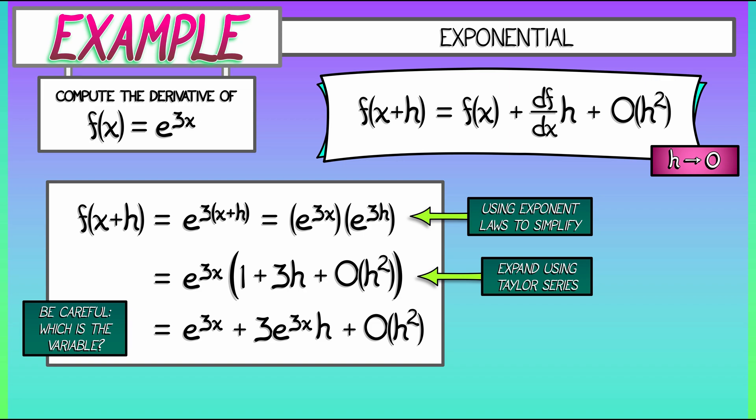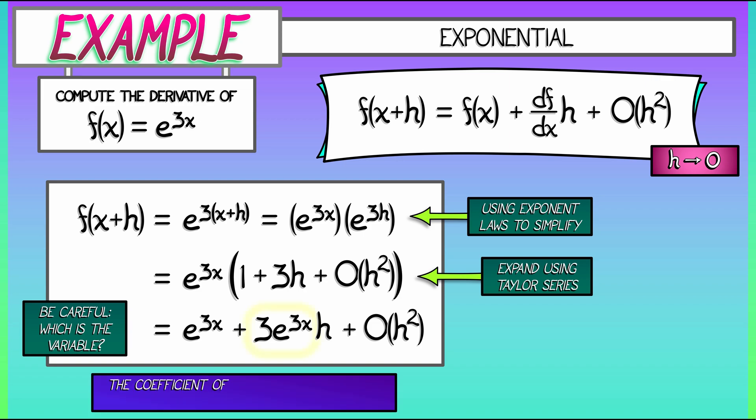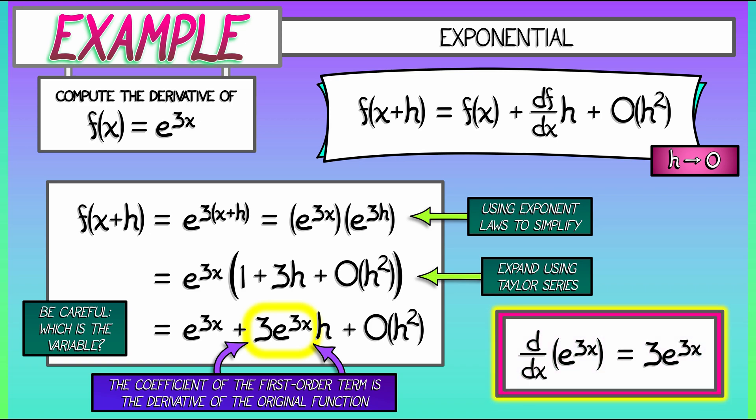Okay, now remember what the goal is. The goal is to look for the coefficient of the first order term in h. What is that? In this case, it is 3 times e to the 3x. And that's it. That's the derivative. The derivative of e to the 3x is 3 times e to the 3x.